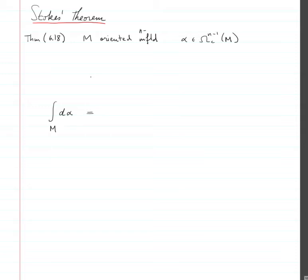If you give me an n-dimensional oriented manifold, then an n-form evaluates on that to give a number. The way it evaluates on it is by integration. That's what we call integration.